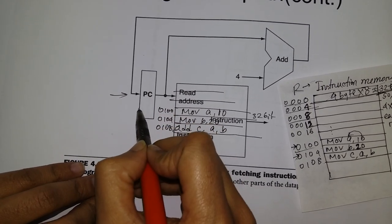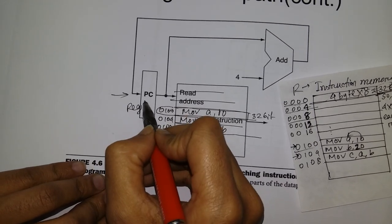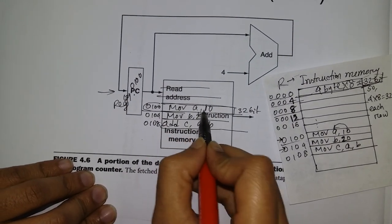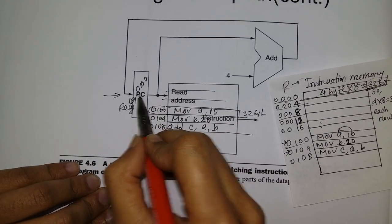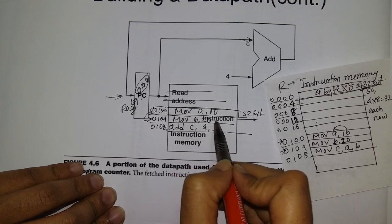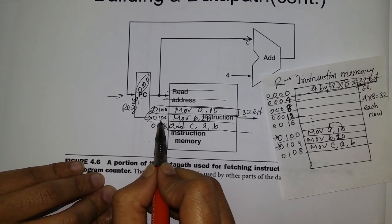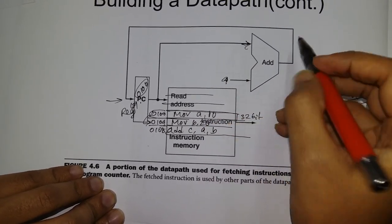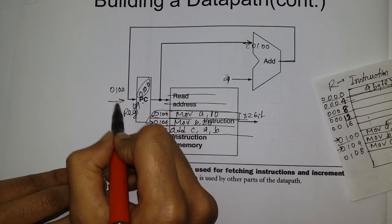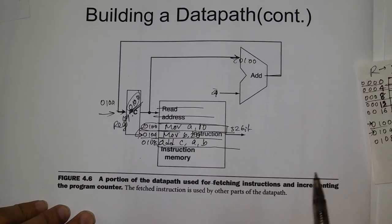The program counter is just a register where the current address to be executed is located. The value is currently 0100, so it executes move a equals 10. Then the value becomes 0104, and the next instruction is executed at 0104.